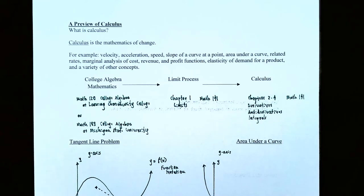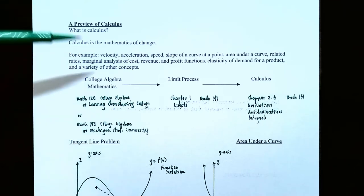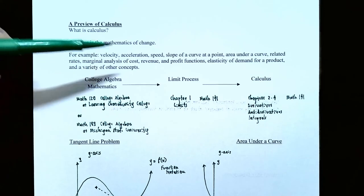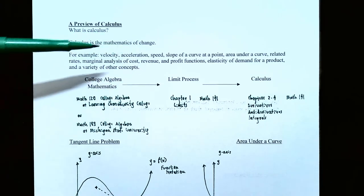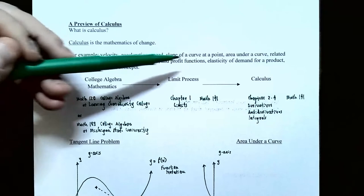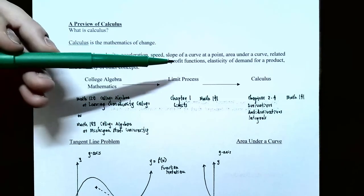Or if you're talking about the speed of an object, it depends on how fast the object is accelerating or moving — you might have different speeds at different moments in time. So here are some examples of where calculus comes in real applications: when you talk about an object's velocity, acceleration, or speed, those can all change. The slope of a curve at a point depends on where on the curve you are, so you might have a different slope.